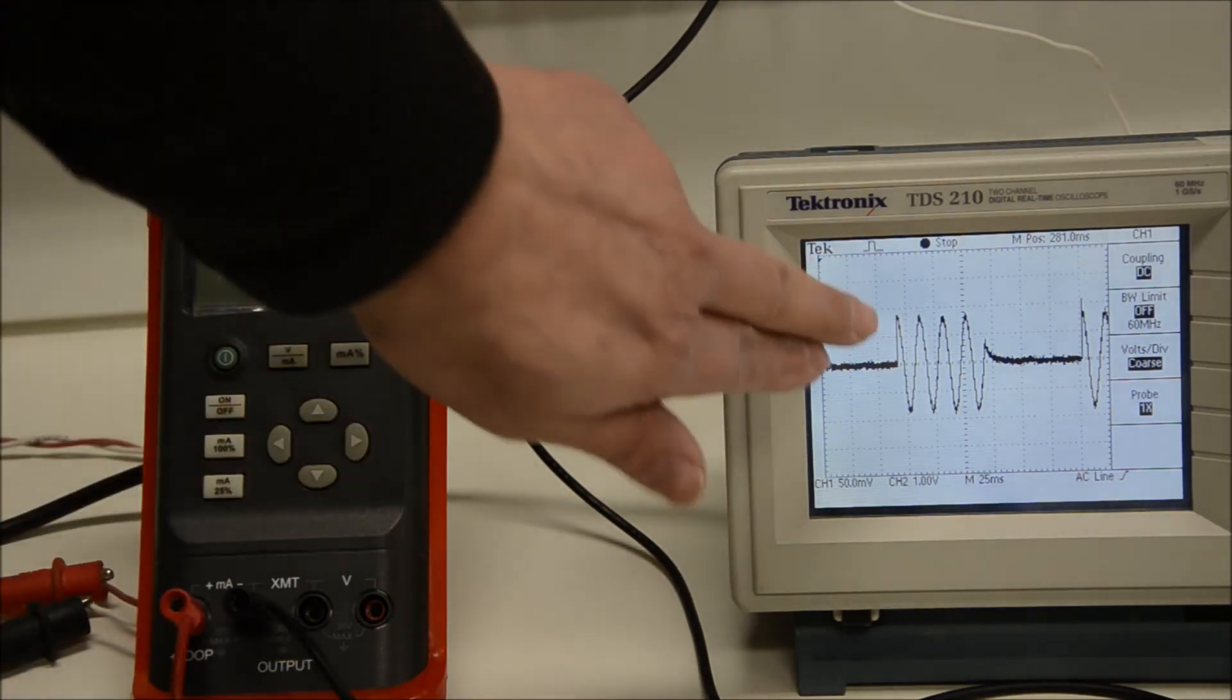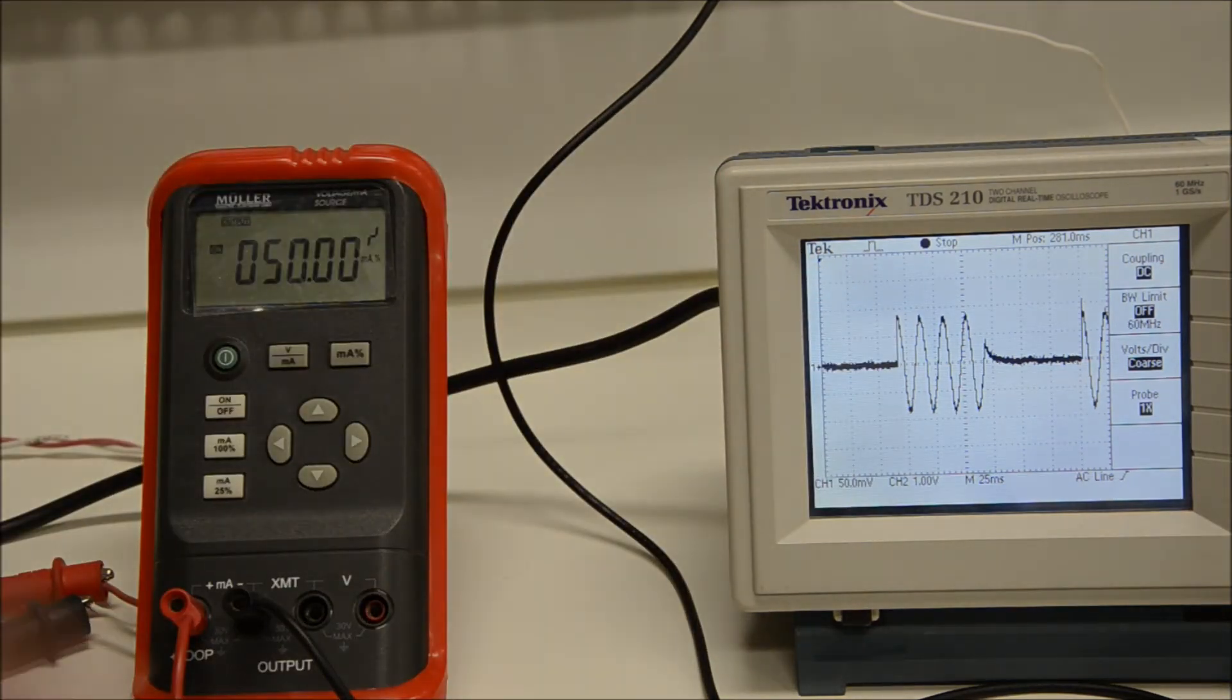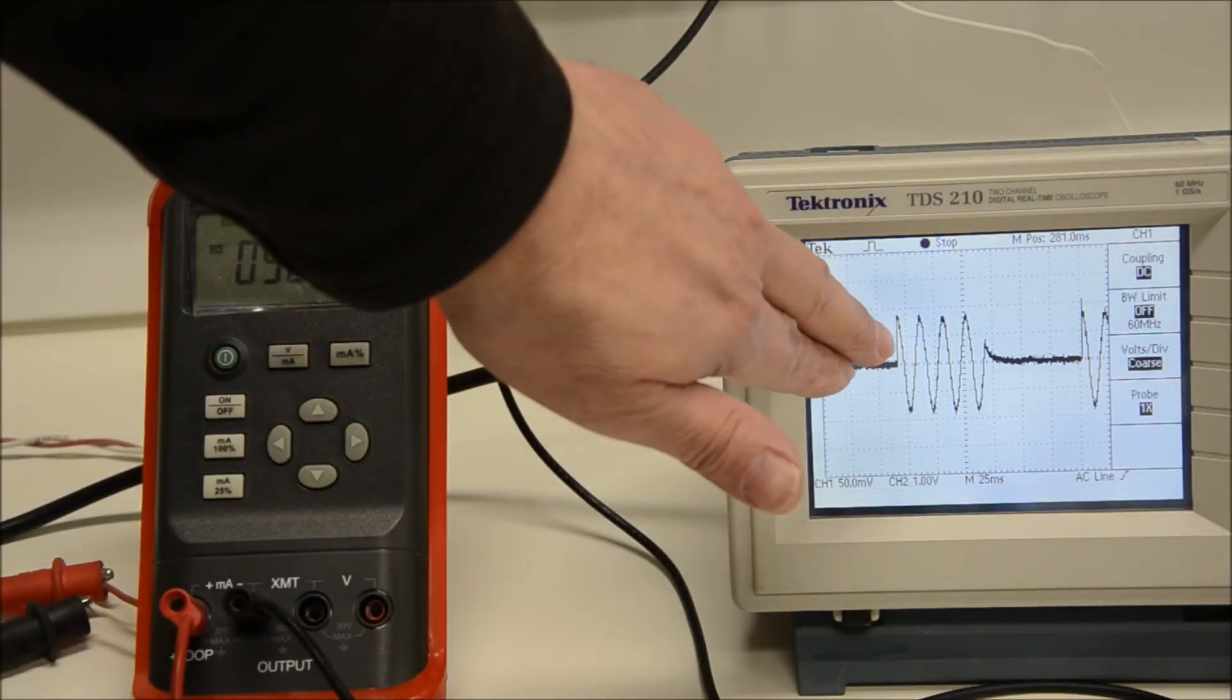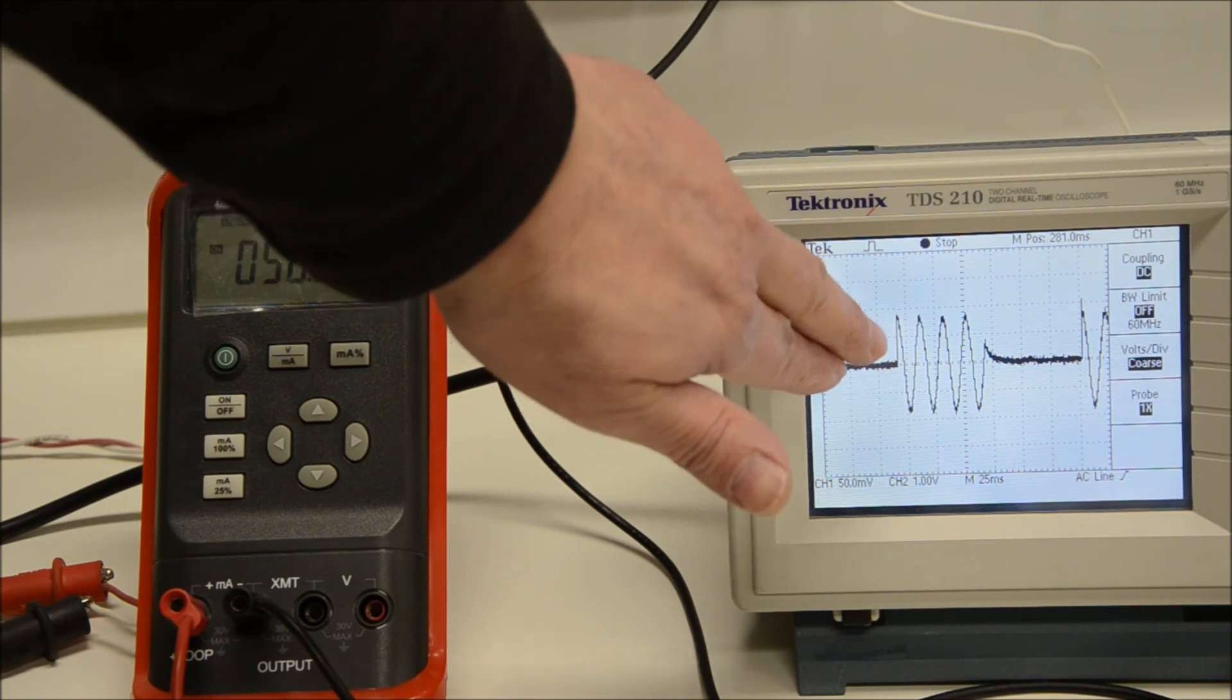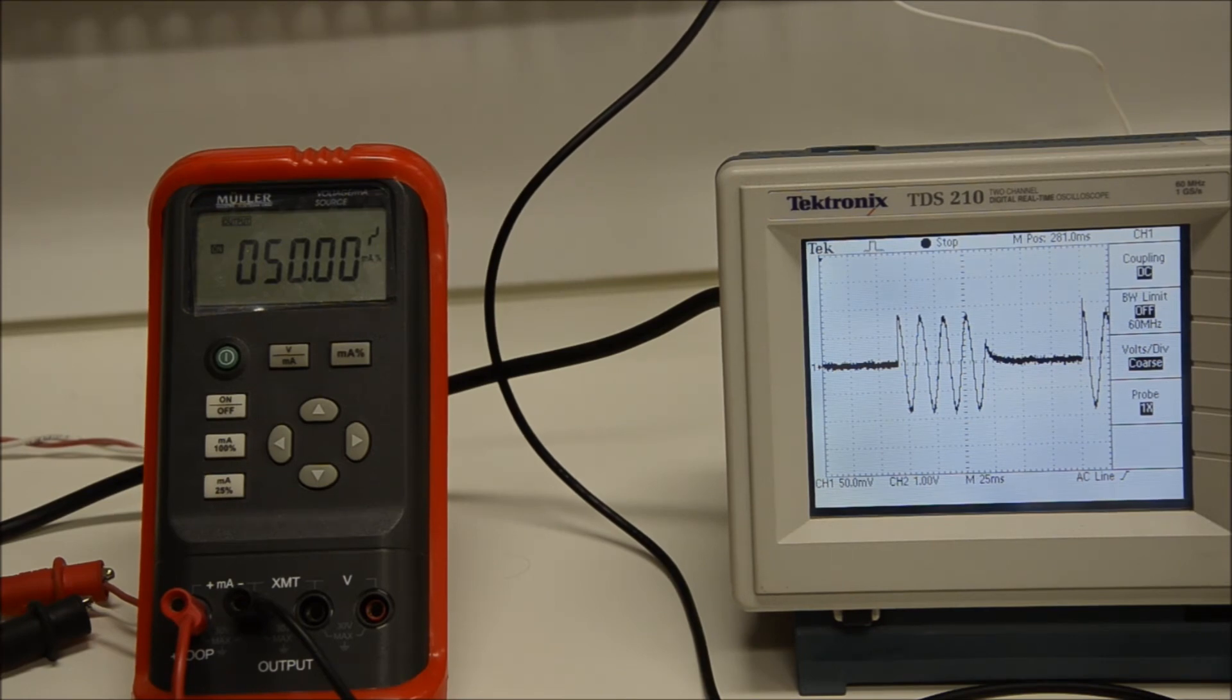We can see just about immediately that that first burst train doesn't have that very high current on the first cycle.